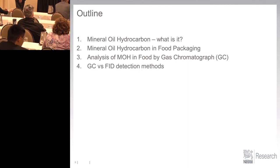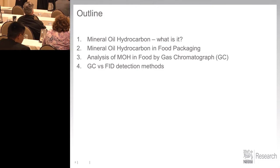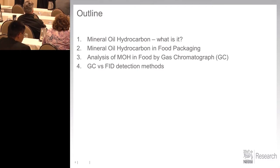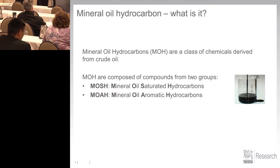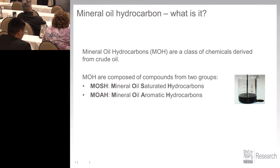So, what are they? Mineral oil hydrocarbons are a class of chemical compounds derived from petroleum. Two different subtypes: MOSH — M-O-S-H — mineral oil saturated hydrocarbon, and MOAH — mineral oil aromatic hydrocarbon. There's a distinct difference between these two.